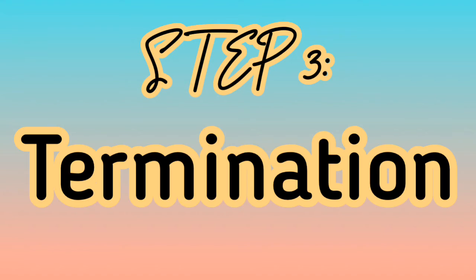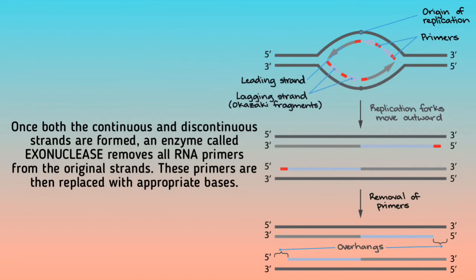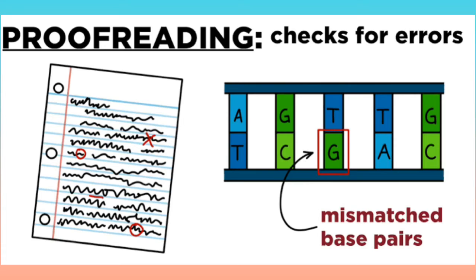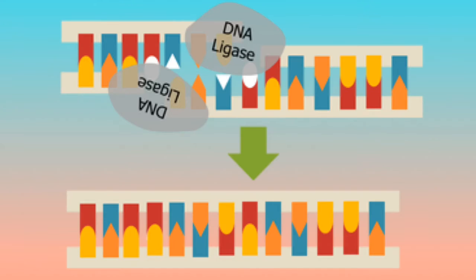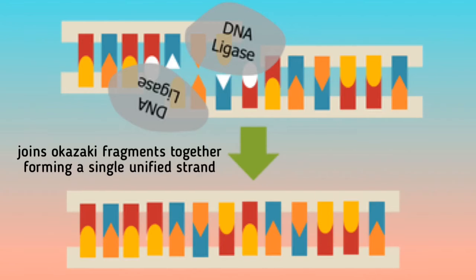Step 3: Termination. Once both the continuous and discontinuous strands are formed, an enzyme called exonuclease removes all RNA primers from the original strands. These primers are then replaced with appropriate bases. Another exonuclease proofreads the newly formed DNA to check, remove, and replace any errors. Another enzyme, called DNA ligase, joins Okazaki fragments together, forming a single, unified strand.